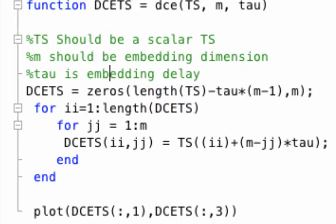If we run this code using a tau of 8 and an m of 7 on the amplitude.dat time series, and we plot the zeroth element versus the second element,